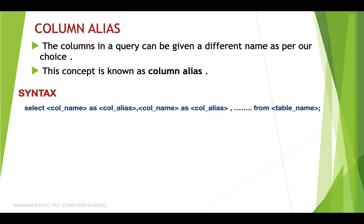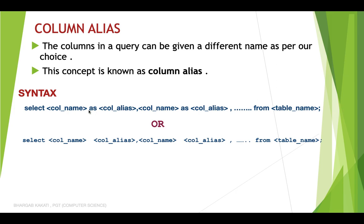The syntax goes as follows: SELECT column_name AS column_alias. Whatever you write as column_alias will become the alternative name for that column. Similarly, wherever you want an alternative name, after the column name you put the keyword AS and then the new name. Alternatively, instead of using the AS keyword, if you directly put a space, SQL will understand that you want to give a new name to the existing column.